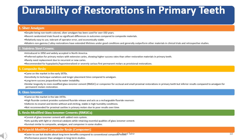Stainless steel crowns: introduced in 1950 and widely accepted in North America, preferred for primary molars with extensive caries, showing higher success rates than other restorative materials in primary teeth. They rarely need replacement due to recurrent or new caries, and are recommended for hypoplastic or hypomineralized or severely carious first permanent molars as provisional restorations.